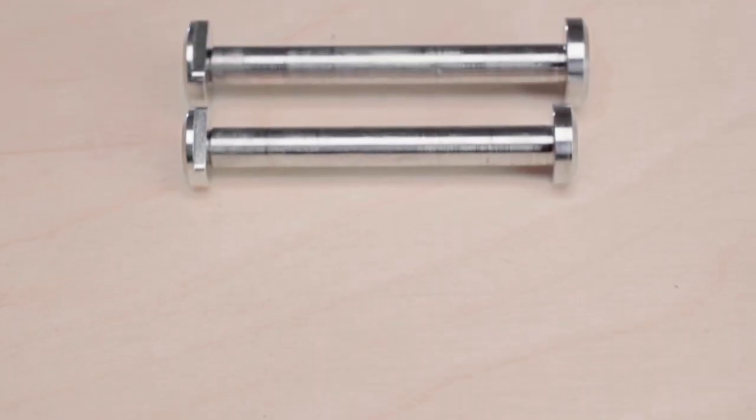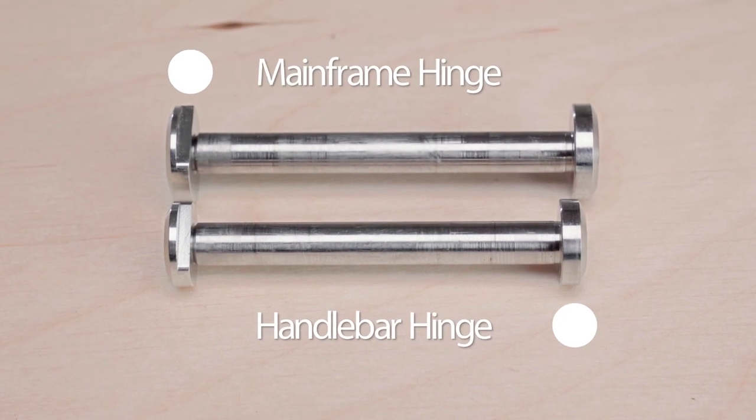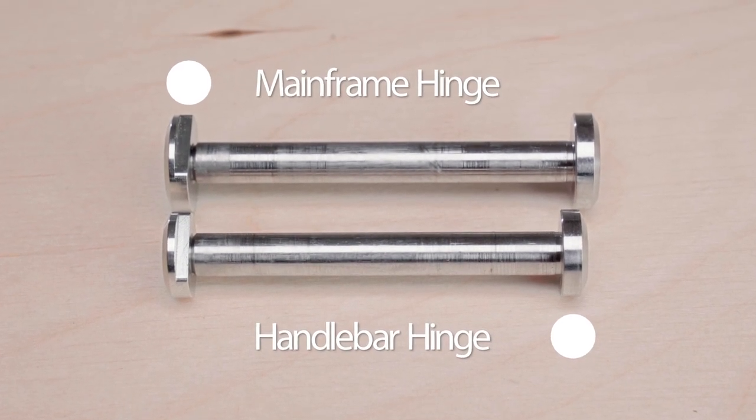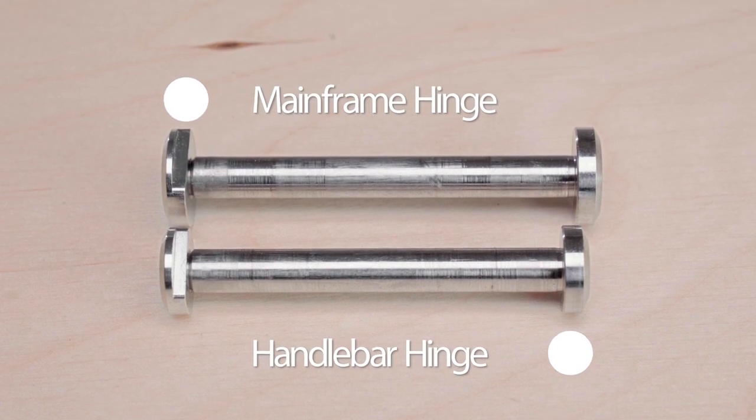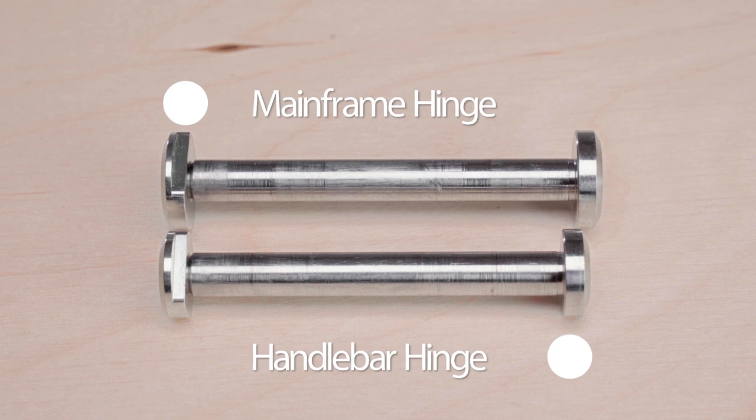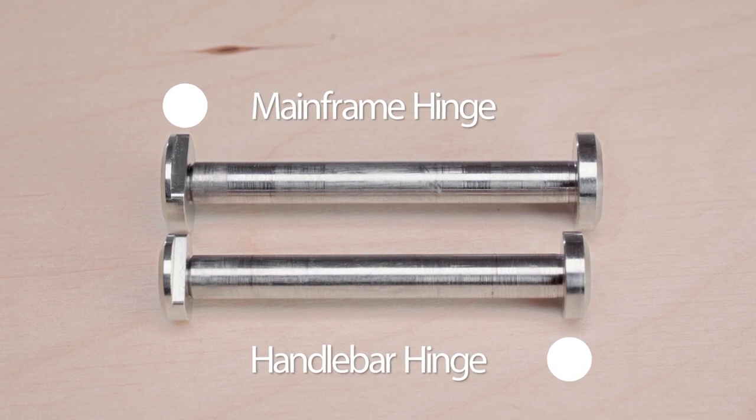The process is identical for the handlebar hinge but please note that the hinges and spindles are different sizes for the handlebar and main frame hinge and so are not cross compatible. Be sure to use the correct one.